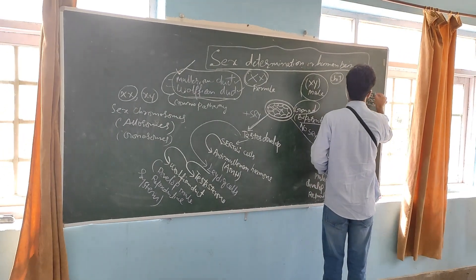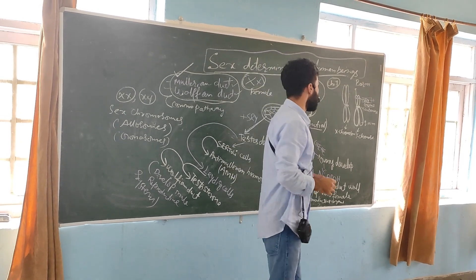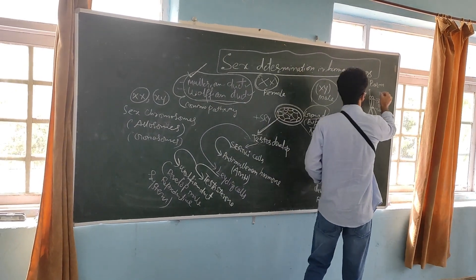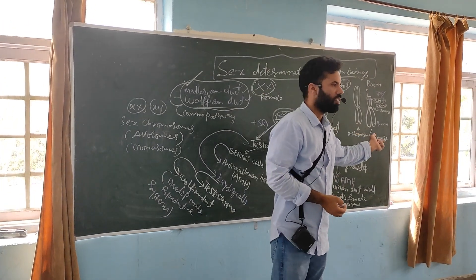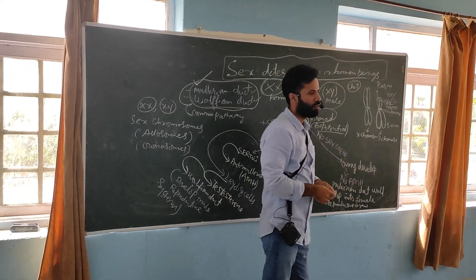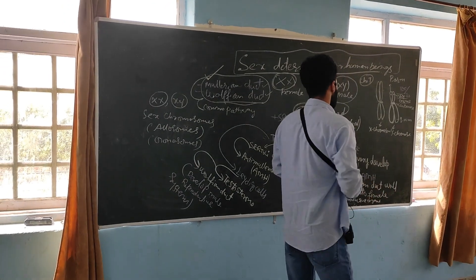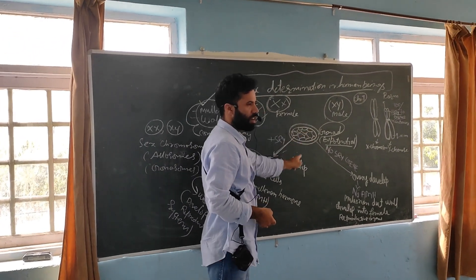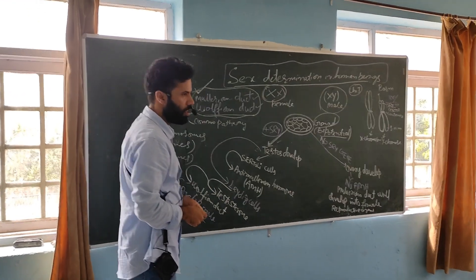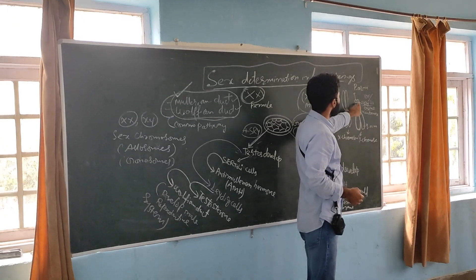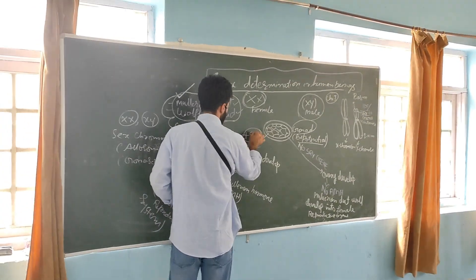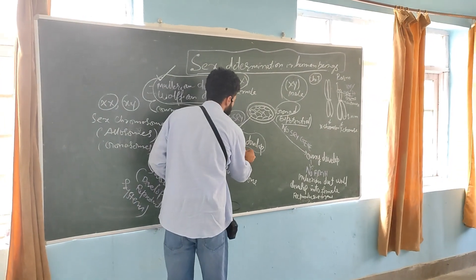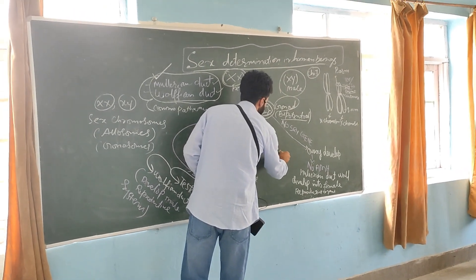The SRY gene is the sex determining region, or testis determining factor. If the Y chromosome is present, there will be an SRY gene on the Y chromosome, and it will initiate the development of the testis. If the Y chromosome is present, SRY gene will be present, and there will be testicular development due to this gene.